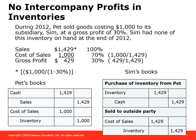Here's an example. During 2012, Pet sold goods costing $1,000 to a subsidiary at a gross profit of 30%. Sim had none of this inventory on hand at the end of 2012. First, we observe what kind of sale we have — downstream or upstream. A downstream sale is when the sale is from the parent, Pet, to Sim. If the sale were from Sim to Pet, that would be upstream.